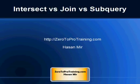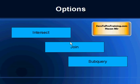Hello, in this session we will talk about INTERSECT versus JOIN versus subquery. This is Hassan Mead from Zero to Pro Training. There are certain queries that could be performed using any of these three methods: the INTERSECT set operation, INNER JOIN, and subquery. We will take one query as an example and see how we can address it using all three methods.